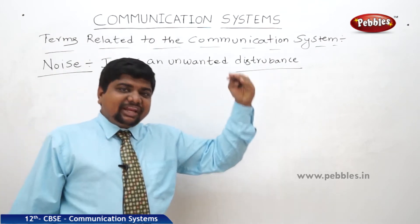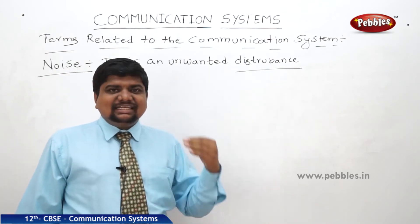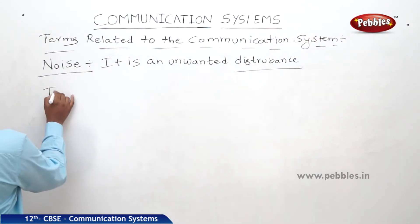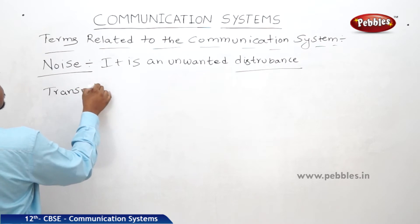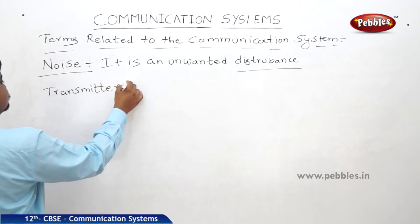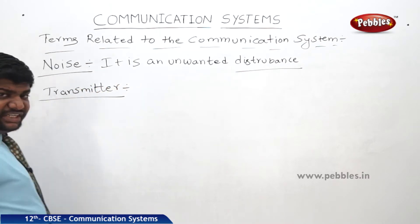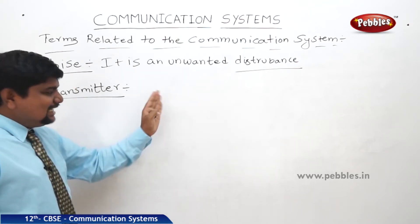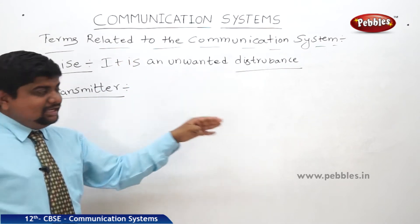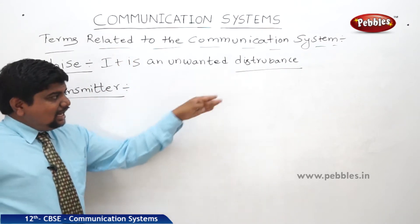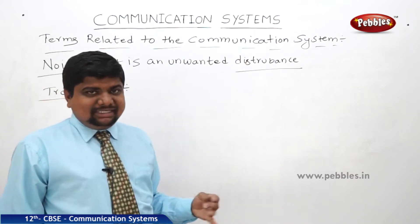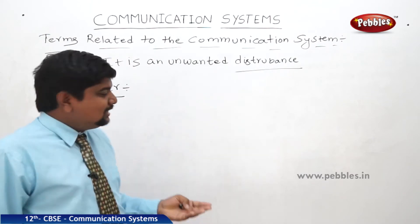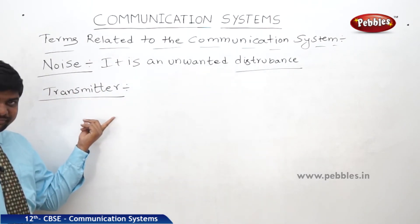This noise should be removed while a transmitter is transmitting the signal from source to the receiver. So that work can be done by the transmitter. What is the use of this transmitter? The transmitter converts the signal into a form which is suitable to transmit. If the receiver is not able to receive it and identify the voice or the noise, so we can confirm that the transmitter is not properly working.